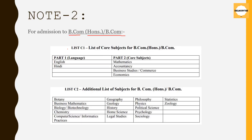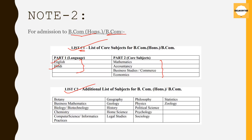Coming over to BCom and BCom Honors programs — Delhi University has given out two lists, List C1 and List C2, for calculating the best 4. For List C1, you first choose one language from Part 1 — either English or Hindi — and then choose any other three subjects from Part 2 of List C1, and then calculate your best 4.